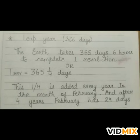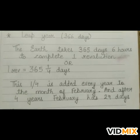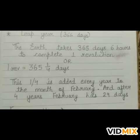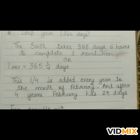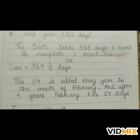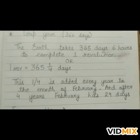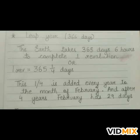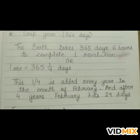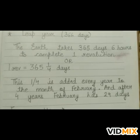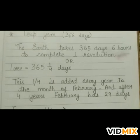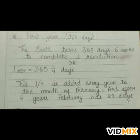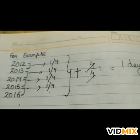Now let us understand about leap year. The earth takes 365 days and 6 hours to complete one revolution, or we can say that one revolution equals 365 and 1/4 days. This 1/4 is added every year to the month of February, and after 4 years, February has 29 days.